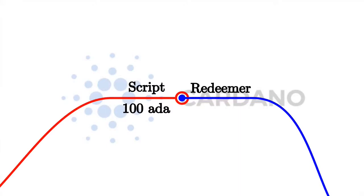The next question is what exactly do we mean by arbitrary logic, and in particular what information — what context — the script has. There are several options. One option is that all the script sees is the redeemer — all the information the script has in order to decide whether it's okay for the transaction to consume this UTXO is the redeemer. And that is actually what Bitcoin does. In Bitcoin there are smart contracts, they're just not very smart — they are called Bitcoin Script. Bitcoin Script works exactly like this: there's a script on the UTXO side and the redeemer on the input side, and the script uses the redeemer to decide whether it's okay to consume the UTXO.